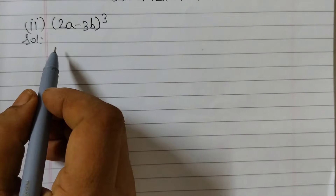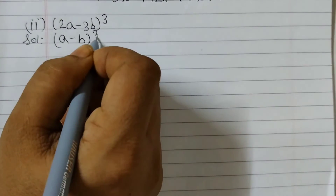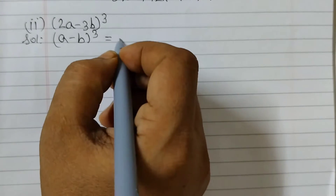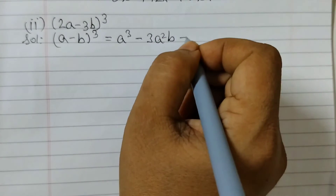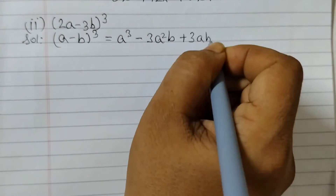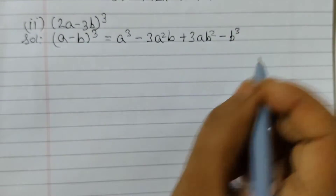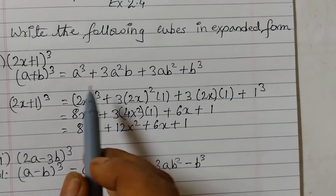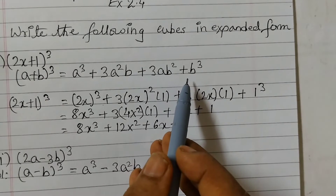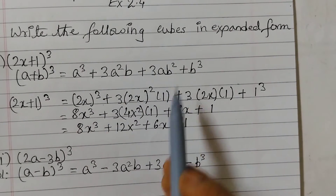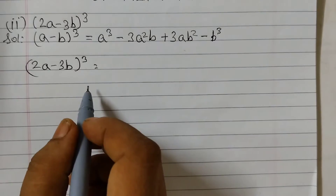Second one: (2a − 3b)³. The identity we will use is (a − b)³ = a³ − 3a²b + 3ab² − b³. This is very similar to the (a + b)³ formula; the only difference is the signs: minus, minus, plus, minus.